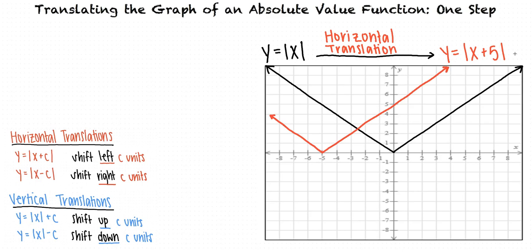Perfect! I think I've got the hang of this. So when translating the graph of an absolute value function, we will have a horizontal translation when a constant is added or subtracted inside the absolute value sign. When the constant is added, we translate the graph to the left. And when the constant is subtracted, we translate the graph to the right.